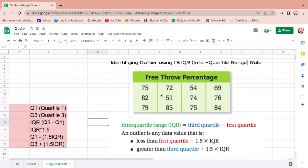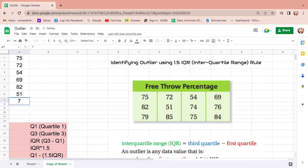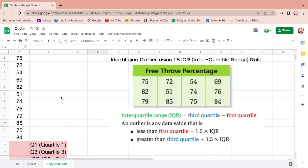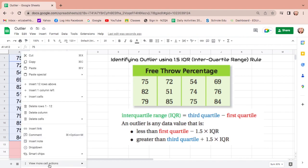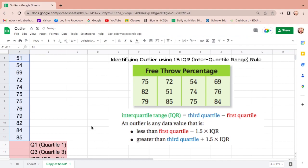Let us try another example, free throw percentage. Let us put all the numbers. Before identifying the outlier, sort this out from least to greatest, sort range, enter.